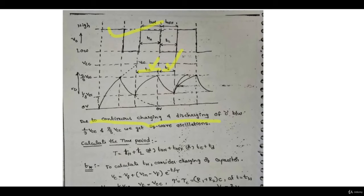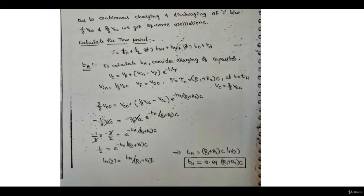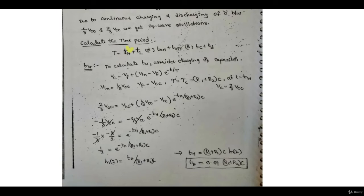Due to continuous charging and discharging of the capacitor between one-third Vcc and two-thirds Vcc, we get square wave oscillations. The time period is the total of on-time and off-time - the charging and discharging time of the capacitor. For charging time, we use the capacitor equation: Vc = Vf + (Vi - Vf)·e^(-t/τ). The initial voltage is one-third Vcc, it tries to reach Vcc with time constant (R1 + R2)·C, and at t = Th the voltage reaches two-thirds Vcc.